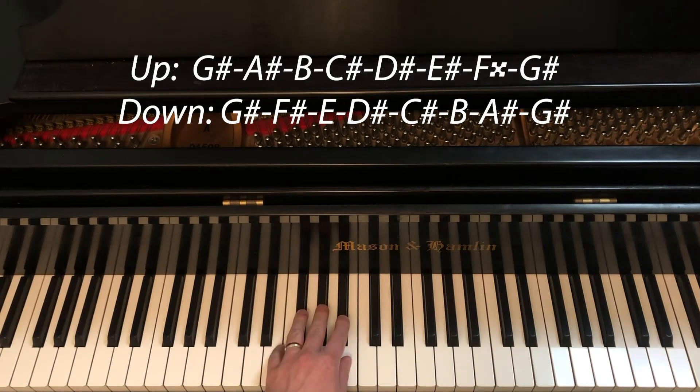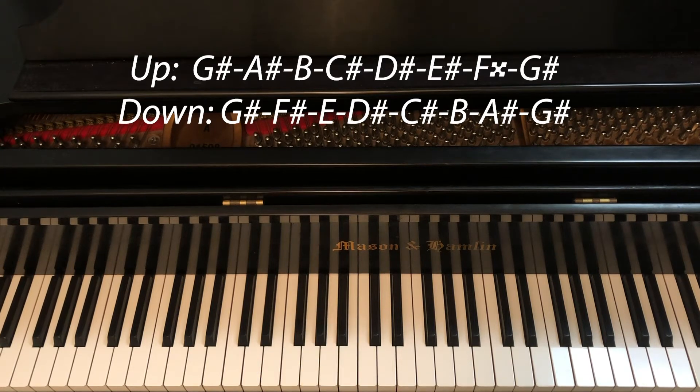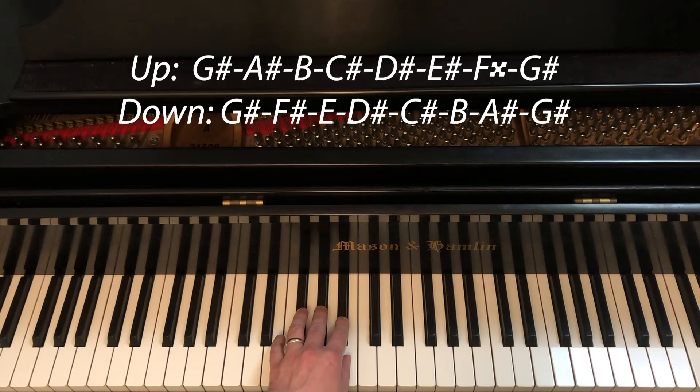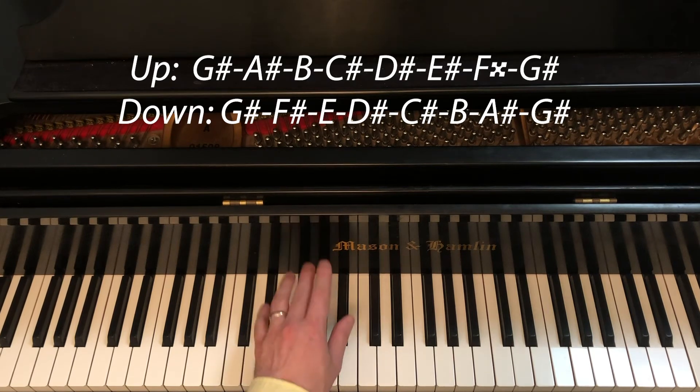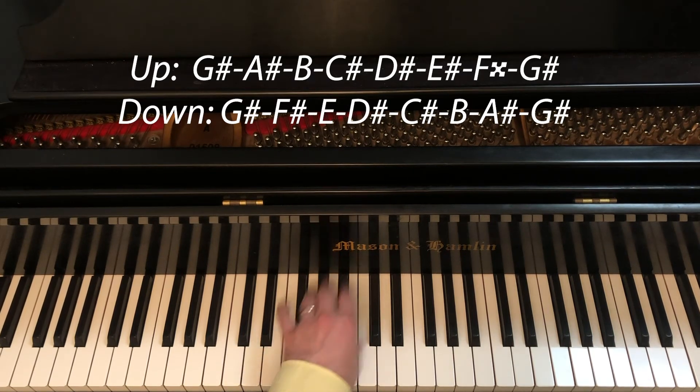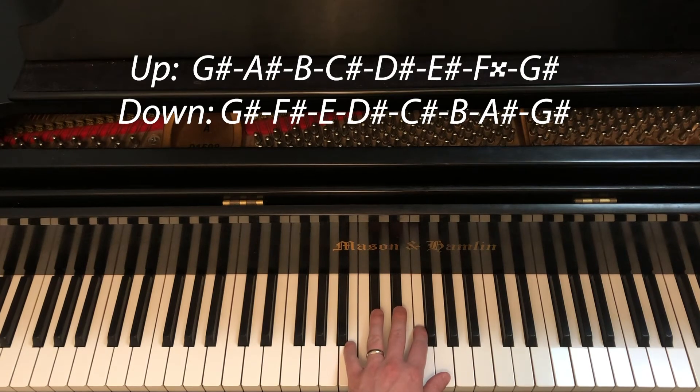In the left hand, G-sharp melodic minor starts on the 3rd finger. 3-2-1. Followed by 4-3-2-1 on C-sharp. C-sharp, D-sharp, E-sharp, F-double-sharp.